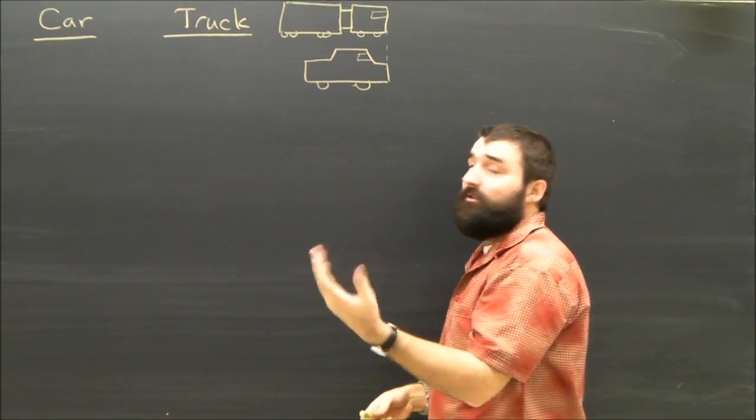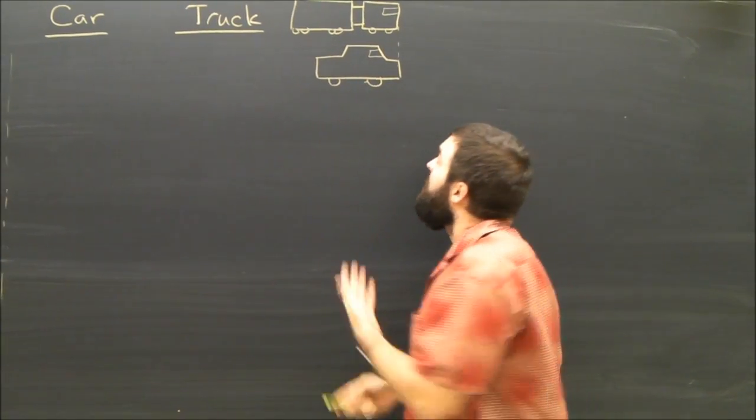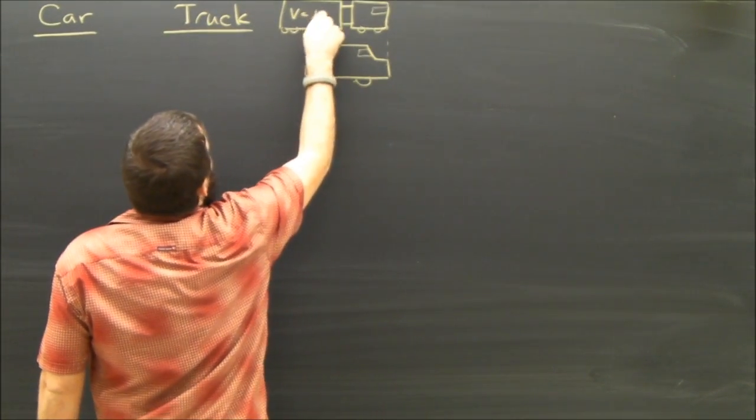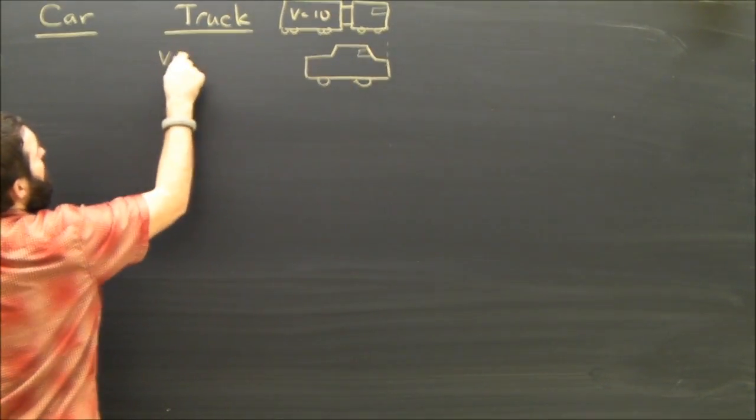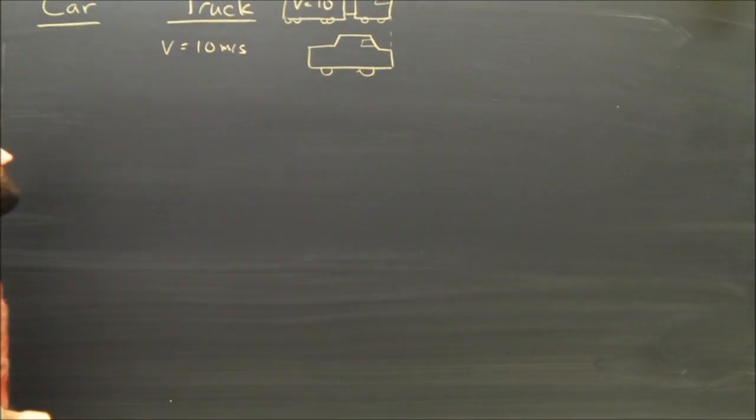So we're going to do givens for each. The truck is a little easier, so we'll start with it. The truck, they said it has a constant velocity of 10. So under truck, I'm going to write v equals 10 meters per second.